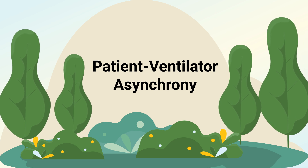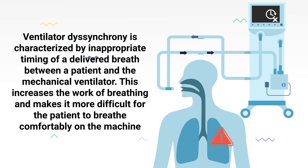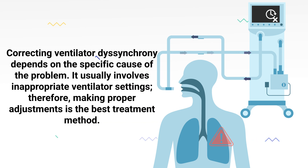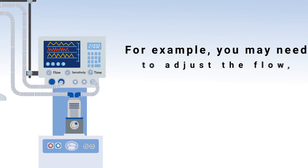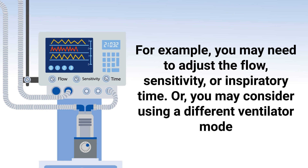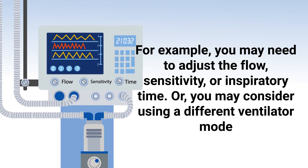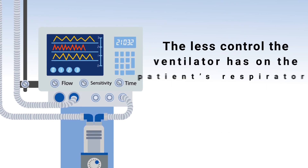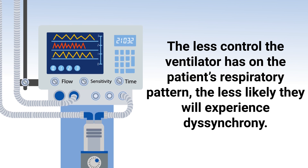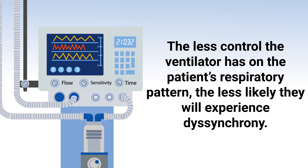The next problem is patient-ventilator asynchrony, or dyssynchrony. Ventilator dyssynchrony is characterized by inappropriate timing of a delivered breath between a patient and the mechanical ventilator. This increases the work of breathing and makes it more difficult for the patient to breathe comfortably while on the machine. Correcting ventilator dyssynchrony depends on the specific cause but usually involves making proper adjustments to inappropriate ventilator settings. For example, you may need to adjust the flow sensitivity or inspiratory time, or consider using a different ventilator mode. In general, the less control the ventilator has over the patient's respiratory pattern, the less likely they will experience dyssynchrony.